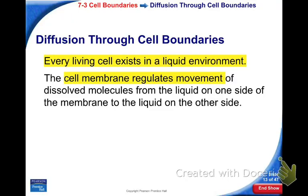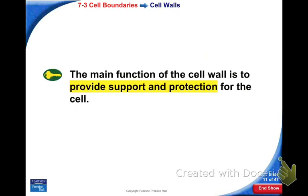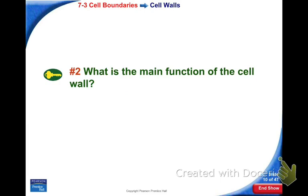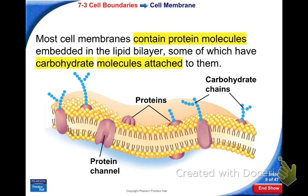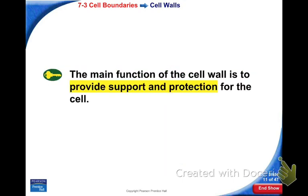So we discussed yesterday the difference between the cell membrane and the cell wall. The function of the cell membrane is to control what can enter and leave the cell — we say that it's selectively permeable — whereas the cell wall provides structure and support for the cell.